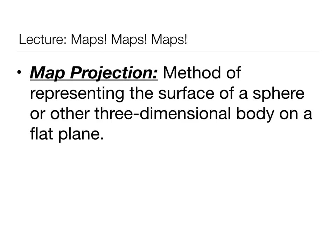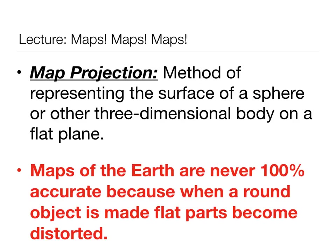A map projection is a method of representing the surface of a sphere or other three-dimensional body onto a flat plane. The reason why maps of the earth are never 100% accurate is because when a round object is made flat, something necessarily has to become distorted.